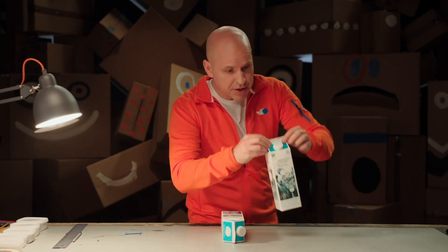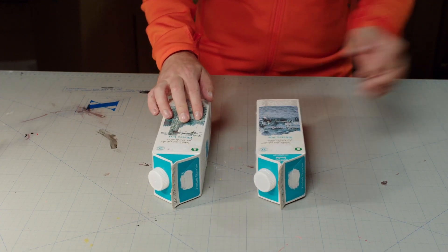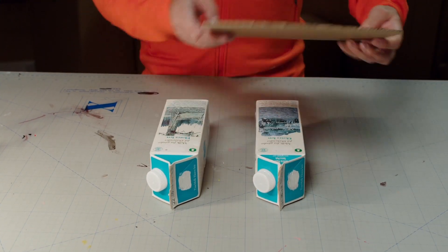First, we need to close up the cartons with a bit of glue so that they're waterproof. Place two cartons side by side and make a piece of cardboard with a curve at one end for the deck.